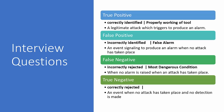False negative is when no alarm is raised when an attack has taken place — for example, a signature designed to detect a certain malware generates no alert when that malware is launched. Last is true negative: a signature designed to detect malware generates no alert because the malware was never launched — correctly rejected, no incident, no alert. True positive is the tool working correctly; false positive is a false alarm; false negative is failing to detect a real threat; true negative is no incident, no identification.